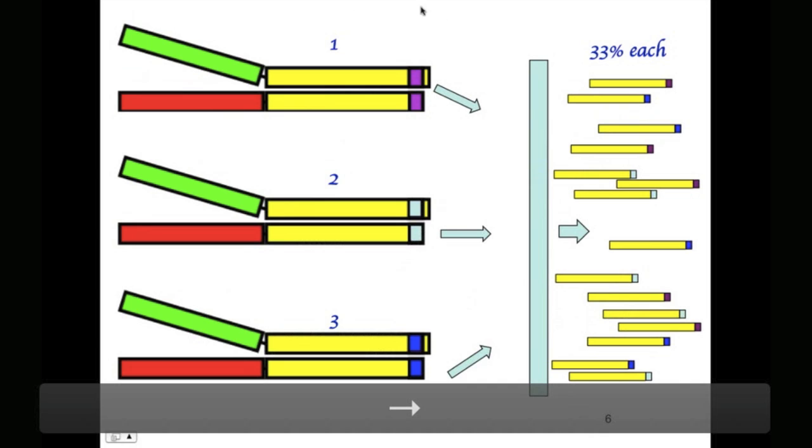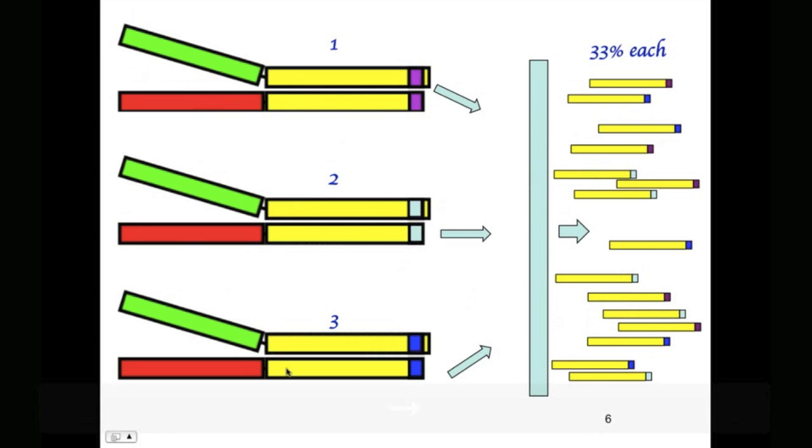So just to show what this would look like, here we have one, two, three different libraries, each with a different barcode. We pool them together, and about a third of the resultant sequences have each of the different barcodes.